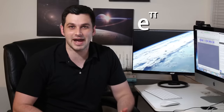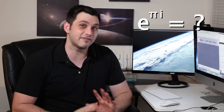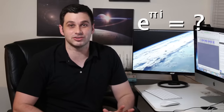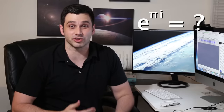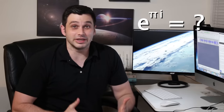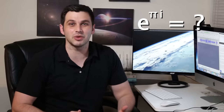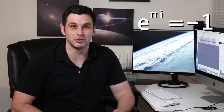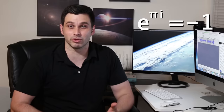What is e to the pi times i? This is one of my favorite things to ask students who have just learned what e is, because they know what all those are, but at the same time this is really hard to guess because it should be just some really random number. But as many of you probably know, the answer is negative 1, which is very odd because it's such a normal number.